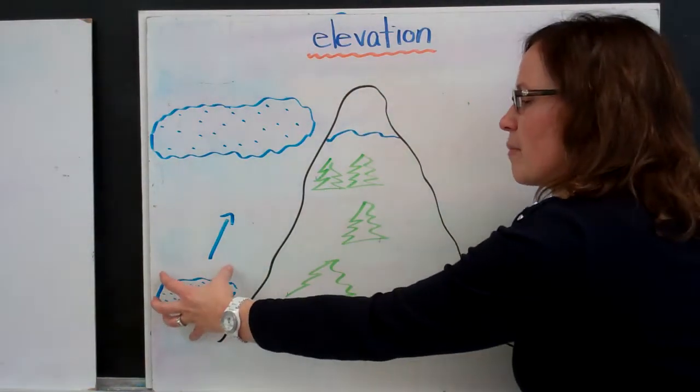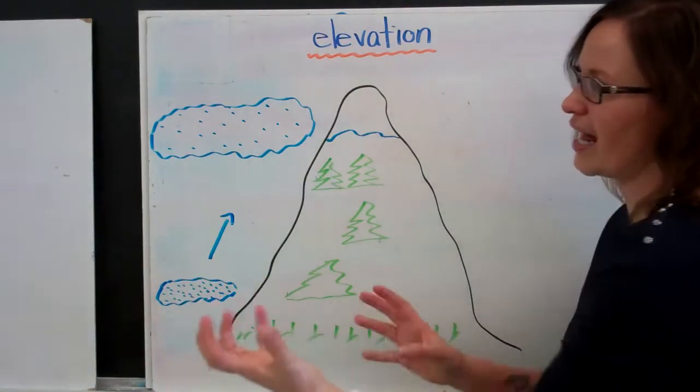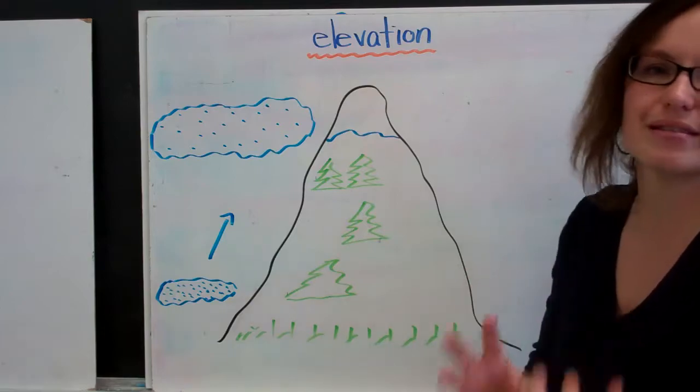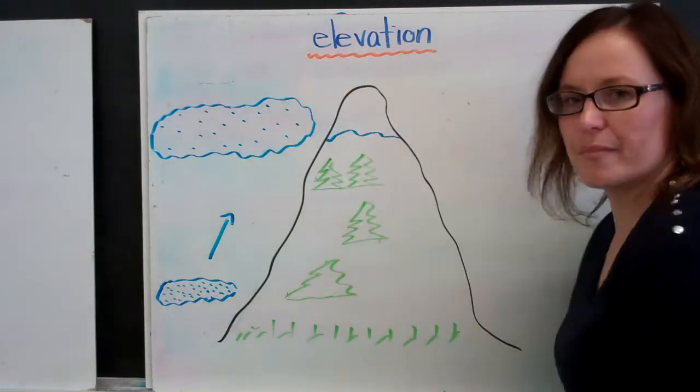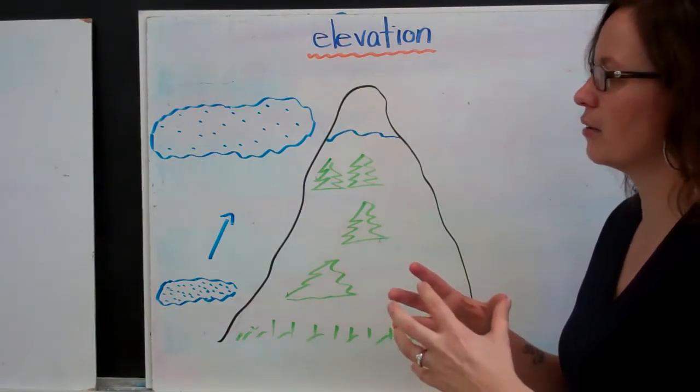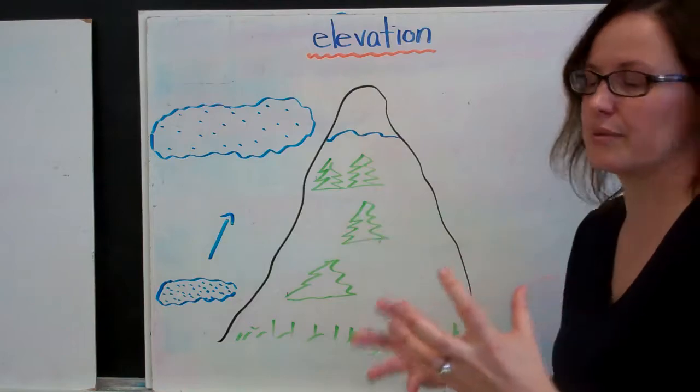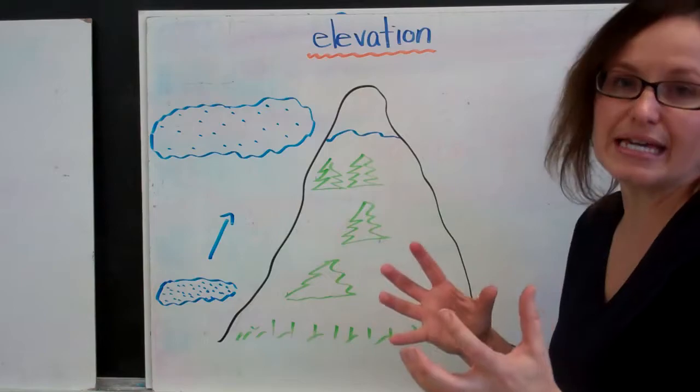When we have an air mass at the bottom of a mountain, the air molecules within that air mass are closer together. The air is more dense. As that air mass moves up the mountain, the molecules start to spread apart, mostly because there's not as much gravity holding them together. And as they spread apart, it's more difficult for them to trap heat.